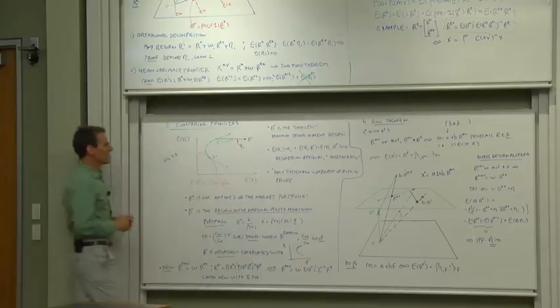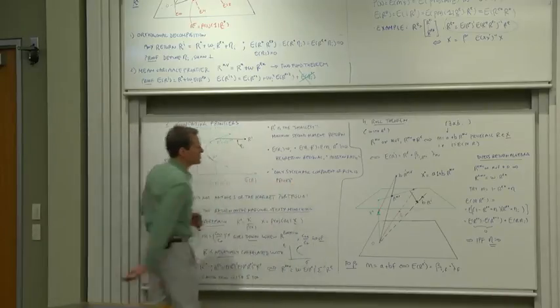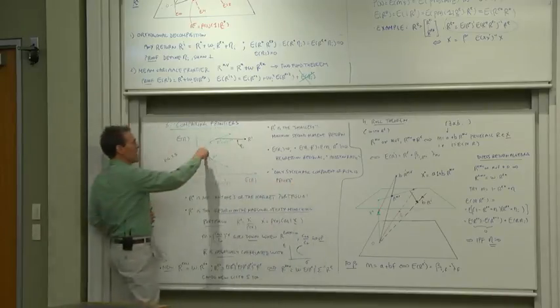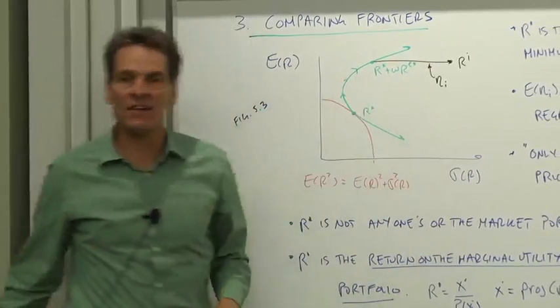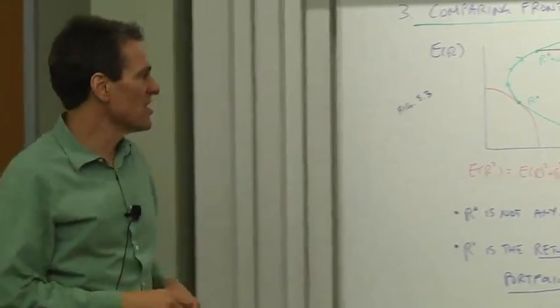So we see again the theorem, only systematic returns are priced. The systematic component generates a mean. The eta is the unsystematic, if you will, component, the part that's not priced.